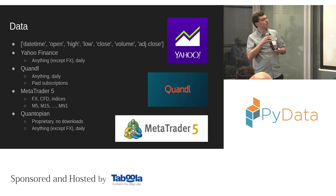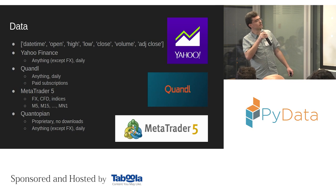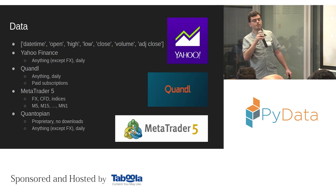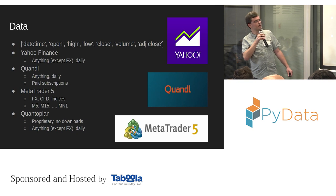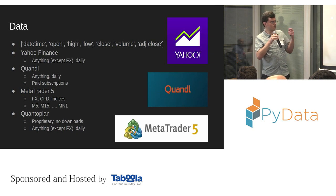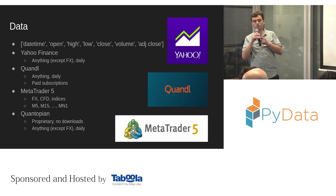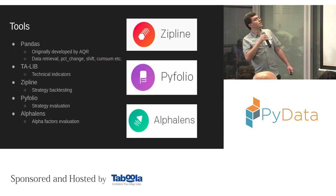As a retail trader, where can you actually get data? There are a couple of sources. Yahoo Finance and Quandl — Quandl has an amazing API and is a wrapper for various datasets including stocks, futures, and historical price data for currencies. If you're more interested in the FX market, MetaTrader 5 would probably be your best friend, because you can use flat files and write that data down. Quantopian, which is a unified platform, also provides proprietary data — you cannot download it, but you can analyze it, create notebooks, and build trading strategies.